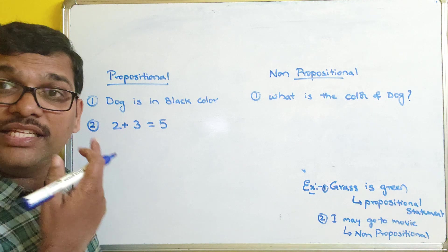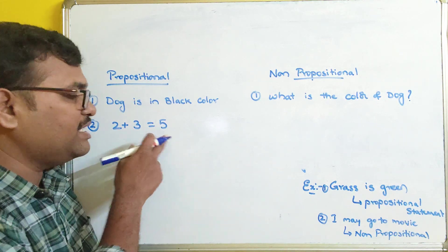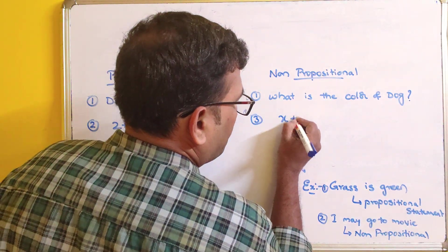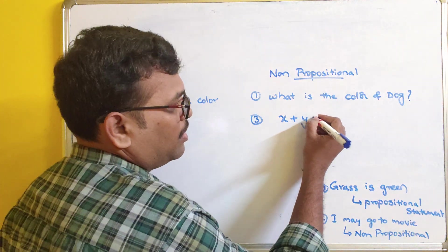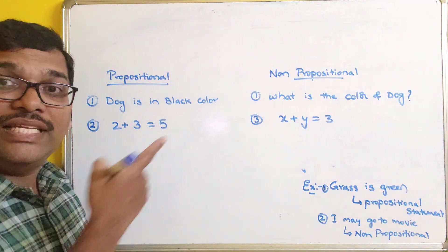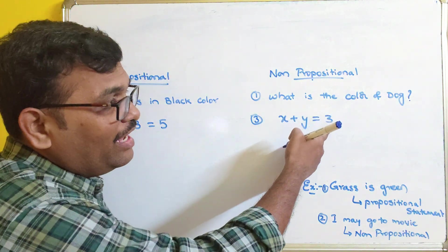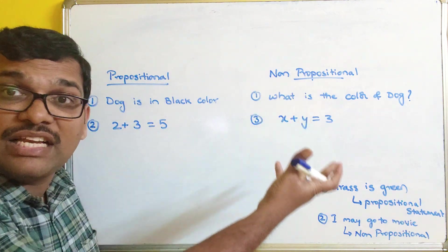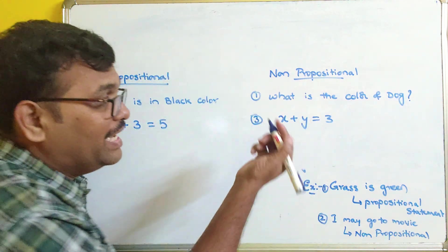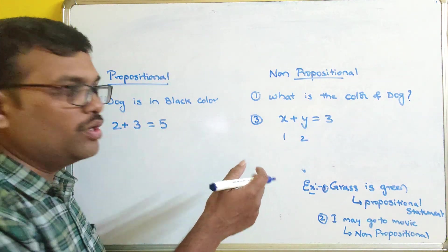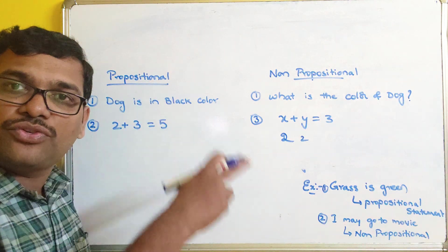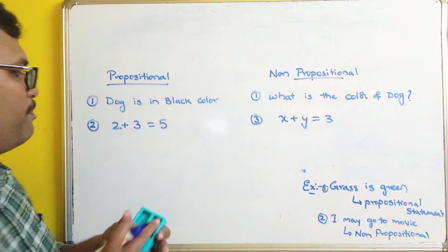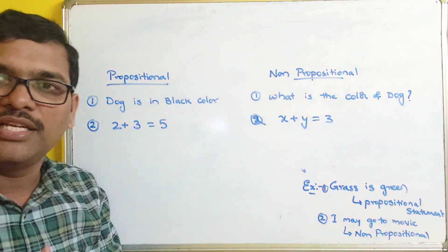We can say '2 plus 3 is equal to 5' is a statement, and it gives either true or false — that is true. But 'the addition of x and y is 3' doesn't come under propositional, because the result depends upon the values of x and y. We are not given x and y, so we can't say whether it is true or false. If x is 1 and y is 2 the statement is true; if x is 2 and y is 2 the statement is false. So we can't decide, and this comes under the non-propositional statement.